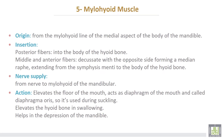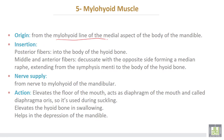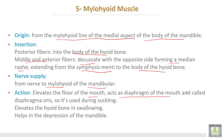The fifth muscle is the mylohyoid, which takes its origin from the mylohyoid line on the medial aspect of the body of the mandible. The posterior fibers are inserted into the body of the hyoid bone, but the middle and anterior fibers decussate with the opposite side, forming a median raphe extending from the symphysis menti to the body of the hyoid bone. The nerve supply of the mylohyoid muscle comes from the mylohyoid branch, which arises from the mandibular nerve. The action of the mylohyoid elevates the floor of the mouth and acts as the diaphragm of the mouth, sometimes called the diaphragm oris.